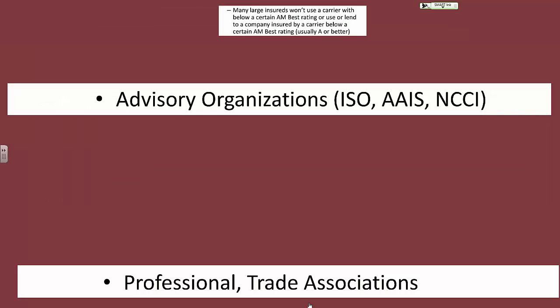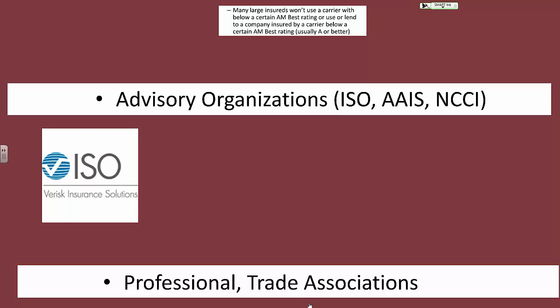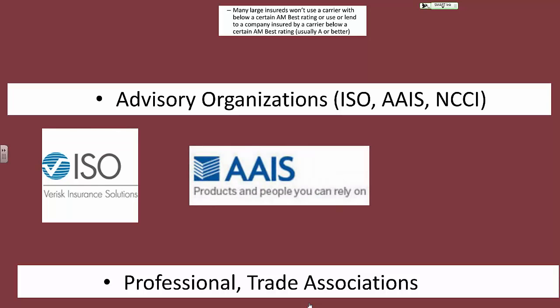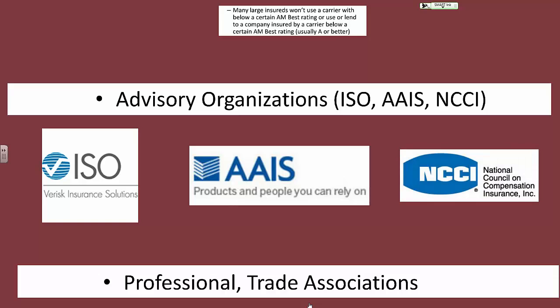Next, advisory organizations. We've already talked at length about ISO. There's also AAIS, which provides similar rates and forms to those provided by the Insurance Services Office. The NCCI, or National Council on Compensation Insurance, provides rates, forms, and other advisory information for workers' compensation insurers in many states.